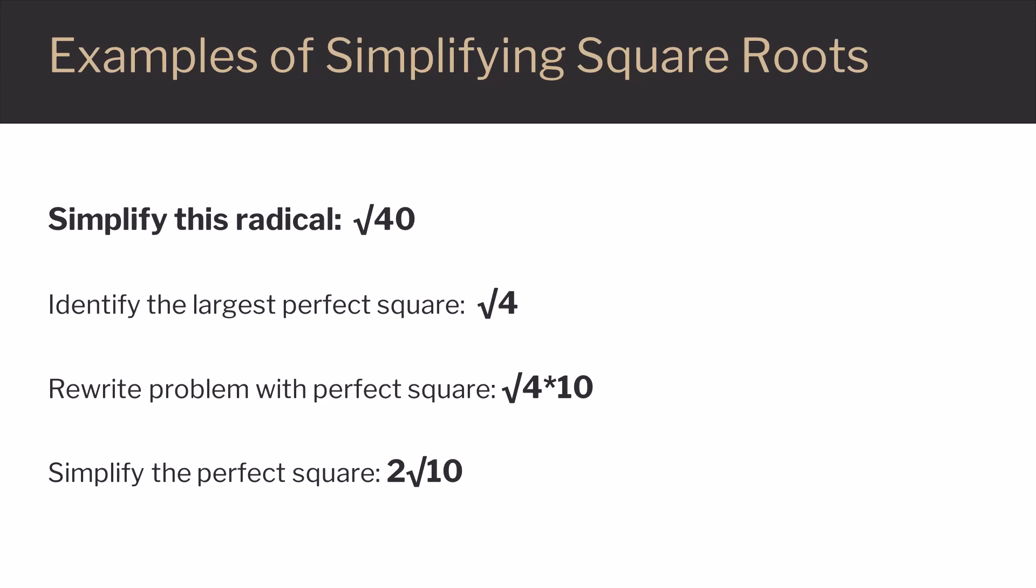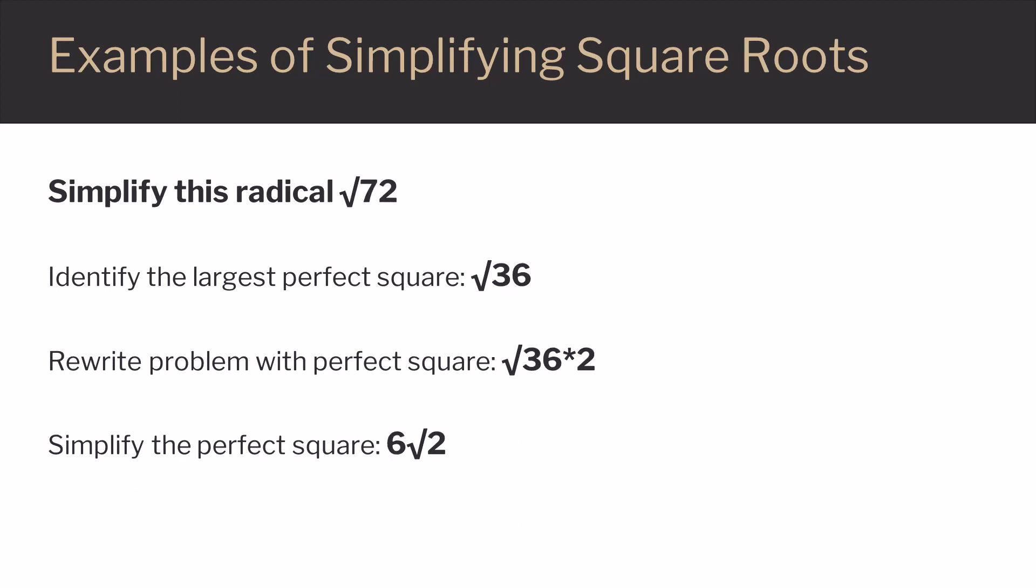Let's take a look at another example. In this example, we're going to simplify the radical 72. We identify the largest perfect square. In this case, it's 36. Keep in mind that in this number, there are other perfect squares. However, 36 is the largest.